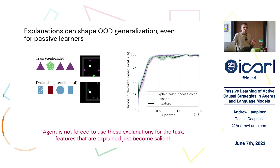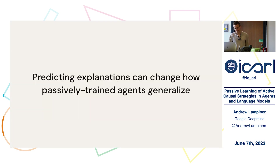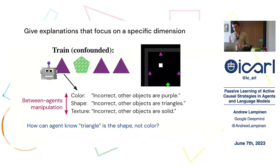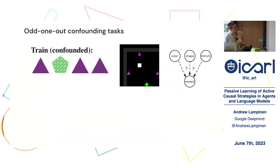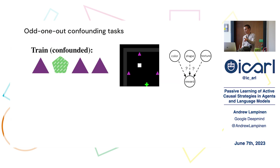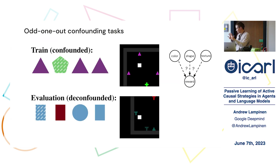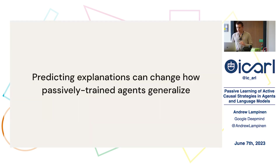This is a very toy demonstration, but it gives you one way to instill some causal structure you know into a system. The explanations shape the agent's feature representations so it's biased towards using the features that are explained. The agent isn't forced to use these explanations for the task, but if the task is hard to learn, the explanations become salient. The rewards point toward the confounded object during training, and since all three features are always present together in training, the agent can only distinguish which feature matters via the explanations.